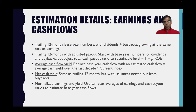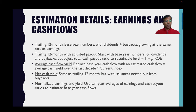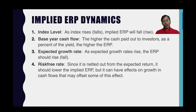In my implied equity risk premium spreadsheet, I have five different variations. Trailing 12-month (the simplest) just takes the base year numbers and grows them at the same rate as earnings. Trailing 12-month adjusted payout adjusts the cash payout to get to a sustainable payout. The average cash flow yield replaces current cash flows with what the cash flows would have been using the average yield over the last 10 years. The net cash yield nets out issuances from the trailing 12-month data. And the normalized numbers normalize both earnings and payout ratios over time. The trailing 12-month number has the longest history, going back to the 1990s, so it's the one to use if you want to compare across time.